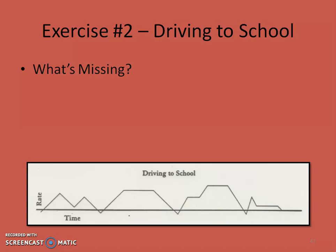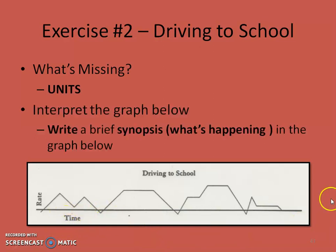In number two — driving to school — again, what's missing? We have a rate, but we don't know: is that miles per hour, kilometers per hour, or maybe centimeters per second? We really don't know. Driving, I'm thinking miles per hour, but you don't know. The title is okay, but there are no units on the time. So now I'm going to ask you to interpret the graph below — write your own brief synopsis of what's happening, what each of these lines would represent while you're driving to school.